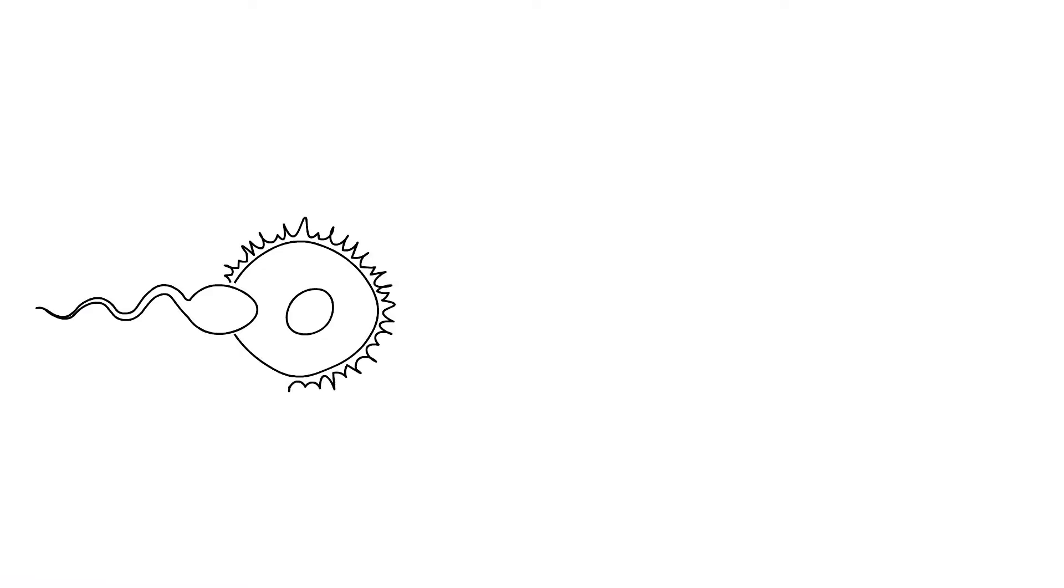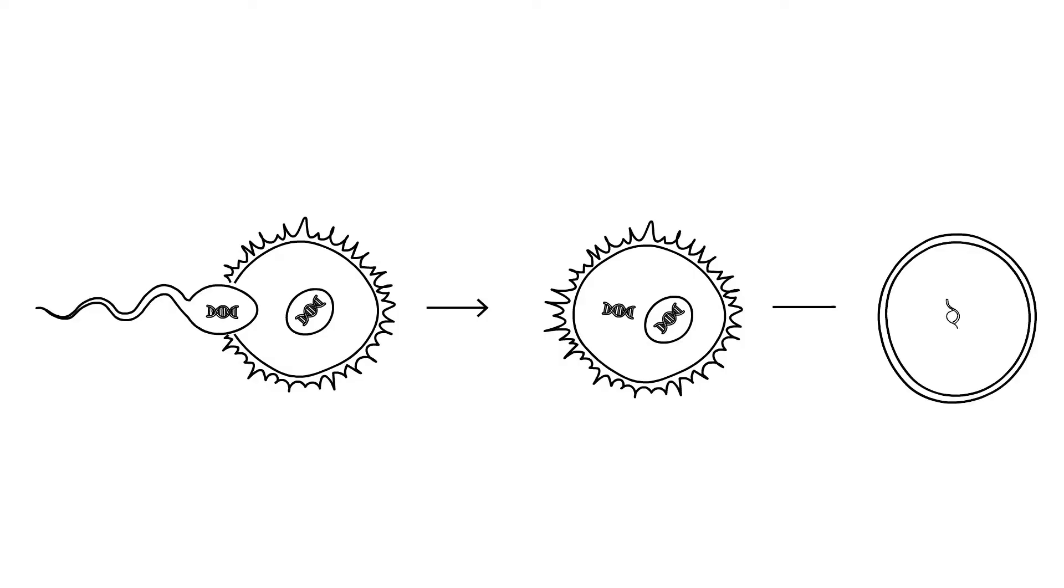When an egg cell and a sperm cell, the gametes, unite to form a zygote, their chromosomes are combined into a single cell. But in order to form a cell with 46 chromosomes, the number of chromosomes in the gametes must be reduced to the haploid state. This occurs through a mechanism called meiosis.